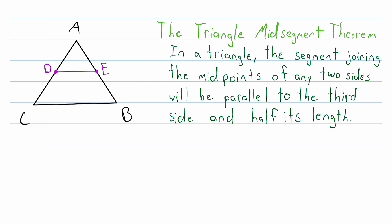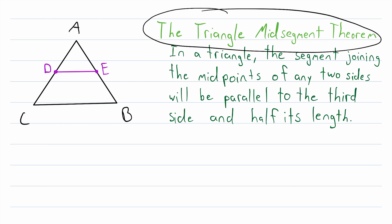It's always a good idea when we're trying to do a geometry proof to sketch the situation. We've got a generic triangle ABC, and without loss of generality, we can pick two sides to construct midpoints on. D and E are the midpoints, and the line segment DE is the segment we're trying to prove stuff about. We're trying to prove that DE is half the length of the third side CB, and we're trying to prove that DE is parallel to CB. If you haven't tried proving the theorem on your own yet, I definitely recommend doing that first.